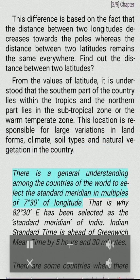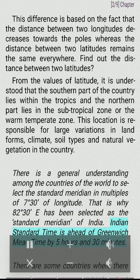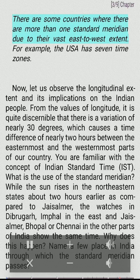There is a general understanding among the countries of the world to select the standard meridian in multiples of 7 degrees 30' of longitude. That is why 82 degrees 30' E has been selected as the standard meridian of India. Indian Standard Time is ahead of Greenwich Mean Time by 5 hours and 30 minutes. There are some countries where there is more than one standard meridian due to their vast east-to-west extent — for example, the USA has seven time zones.